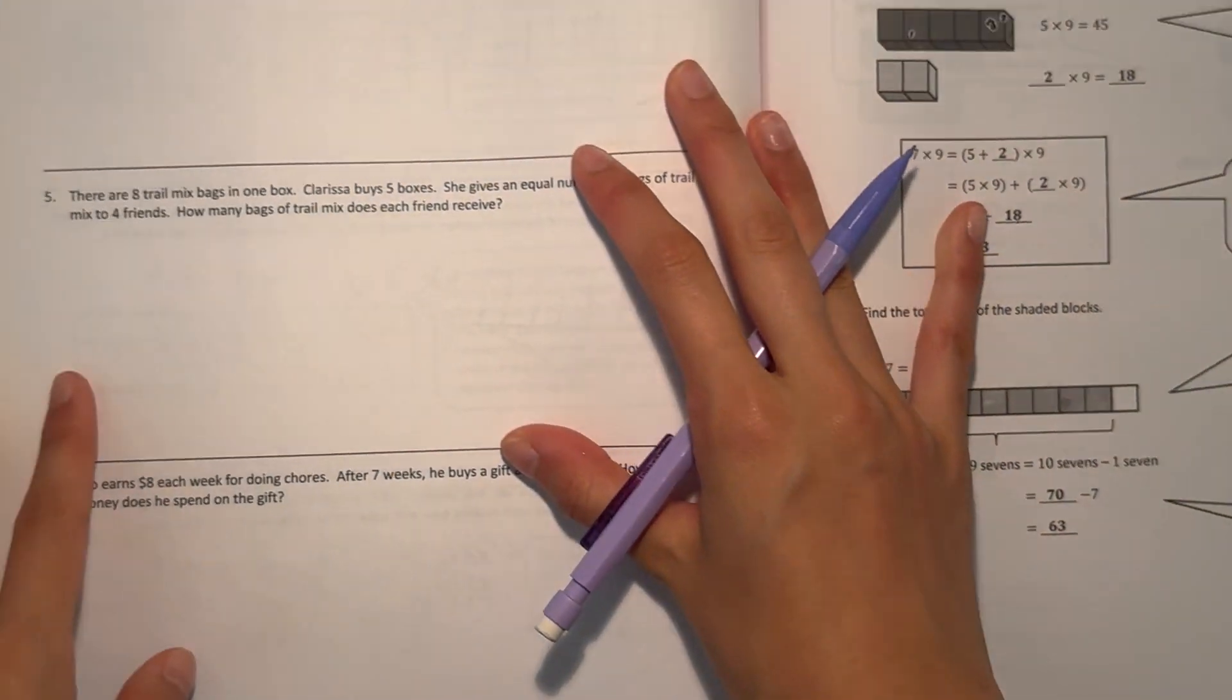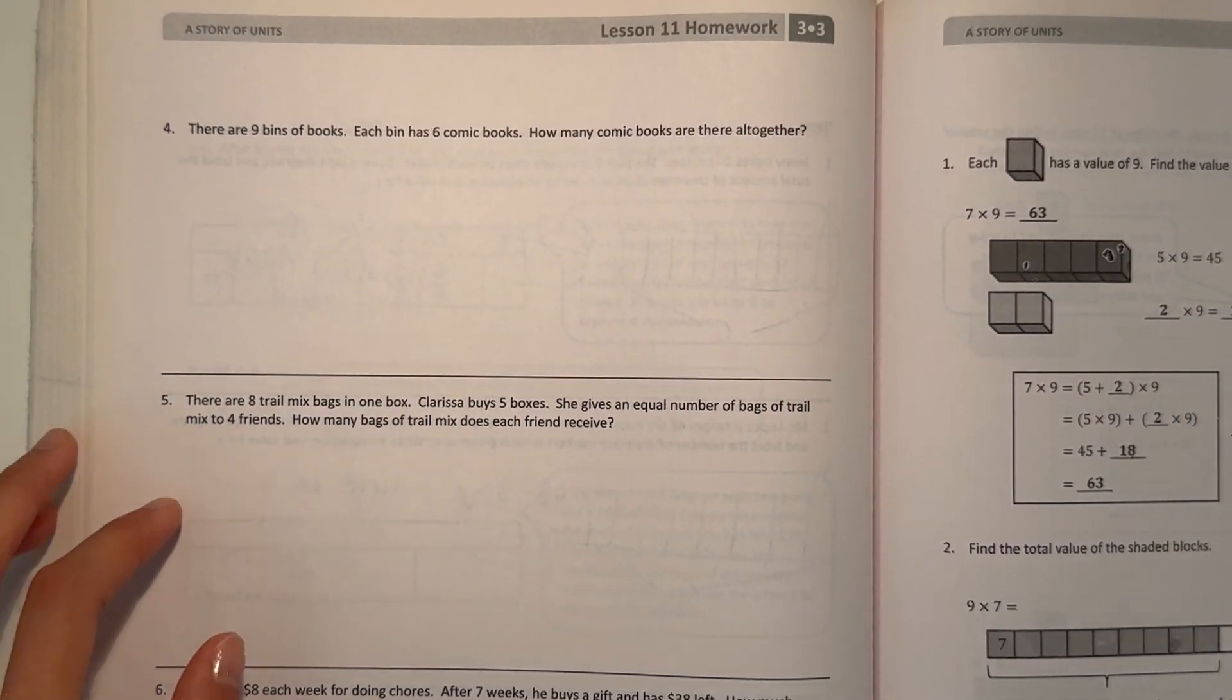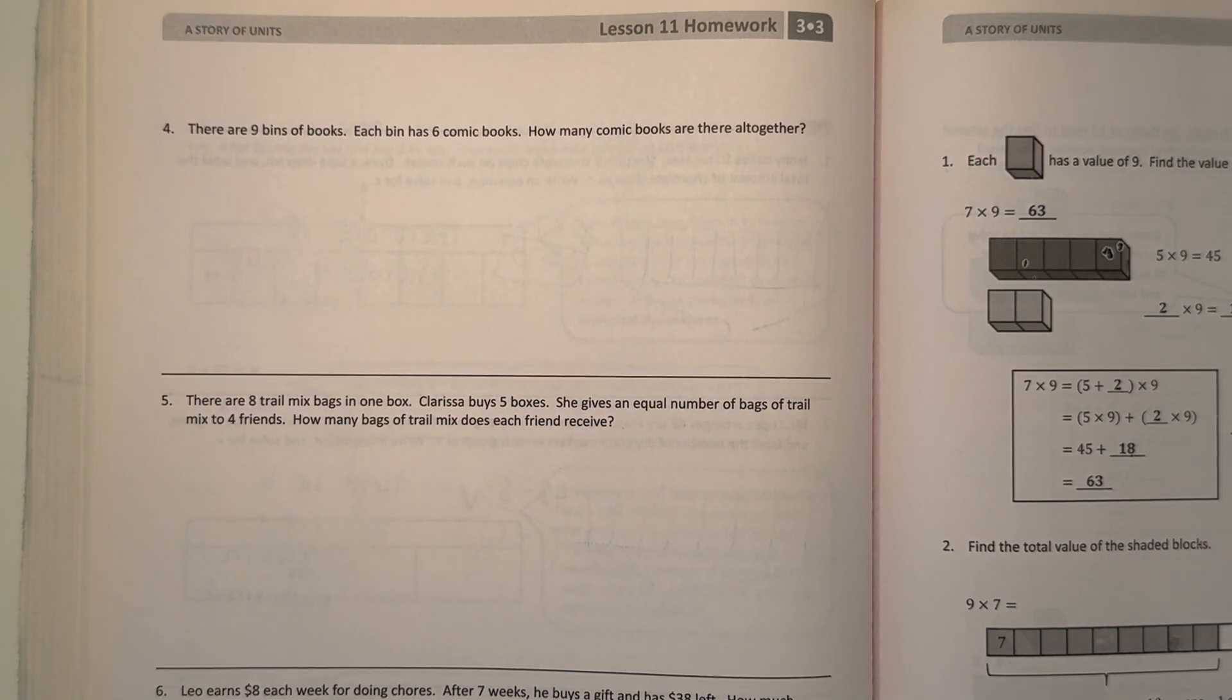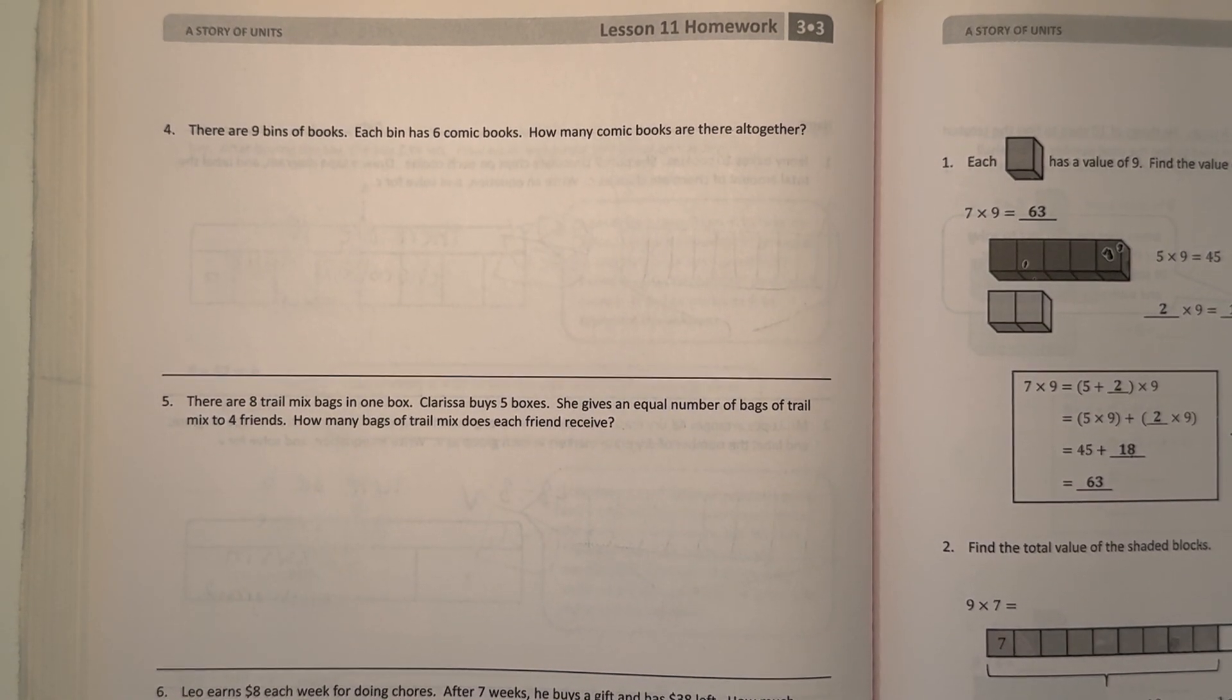Alright, number 4. There are 9 bins of books. Each bin has 6 comic books. How many comic books are there all together?